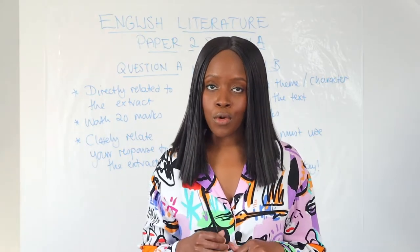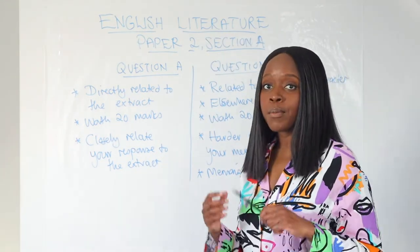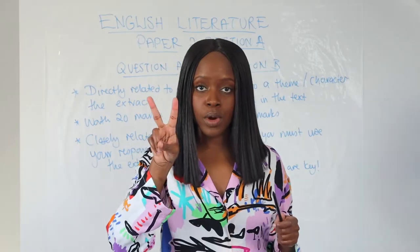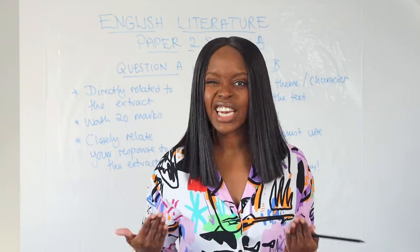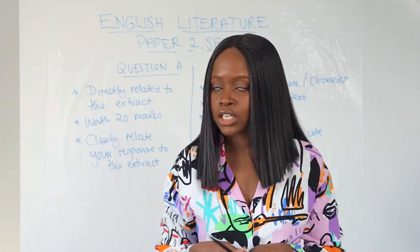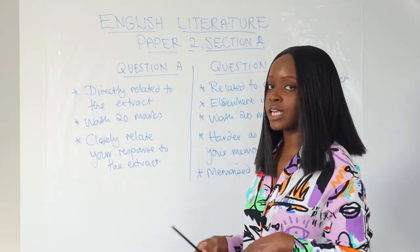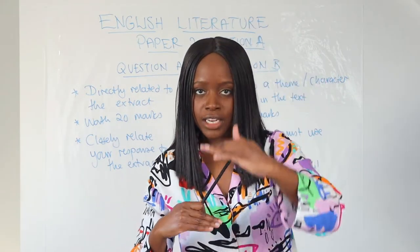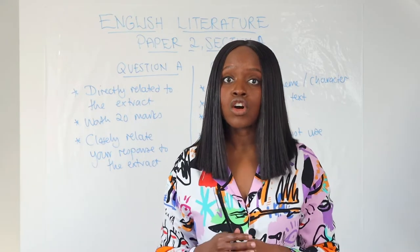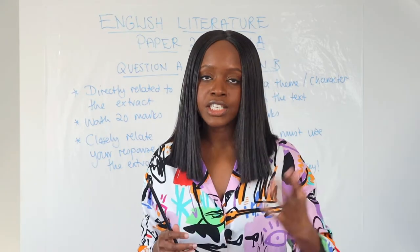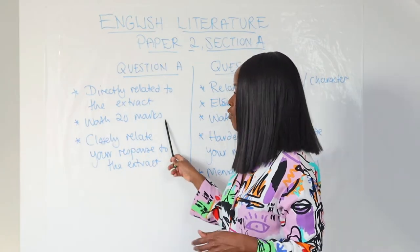When it comes to the English literature paper 2 section A part of your exams, you've got two questions — one general question split into parts A and B, worth 20 marks each. The first question, question A, gives you an extract, so this question is directly related to answering that extract and relating all your responses and paragraphs to it.